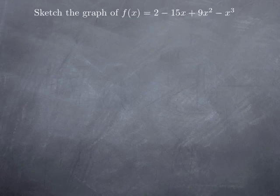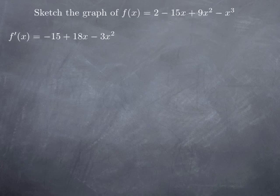So we move to the intervals of increase and decrease of the function, and we know that it depends on the sign of the first derivative. So we calculate the first derivative, which in this case is negative 15 plus 18x minus 3x squared.